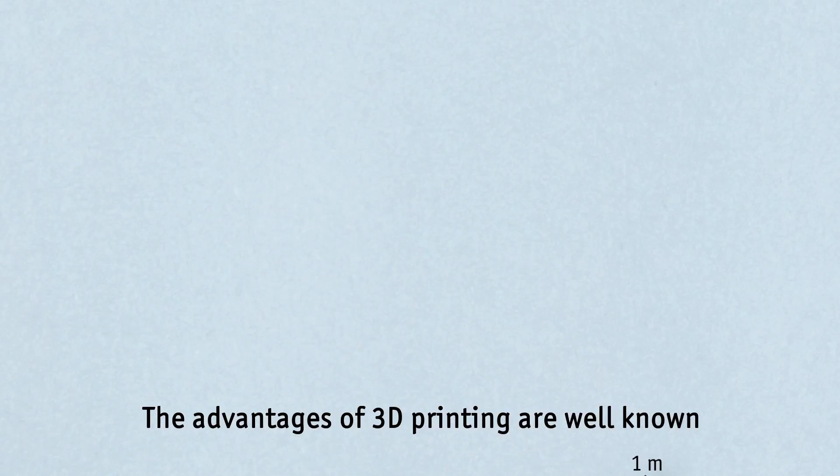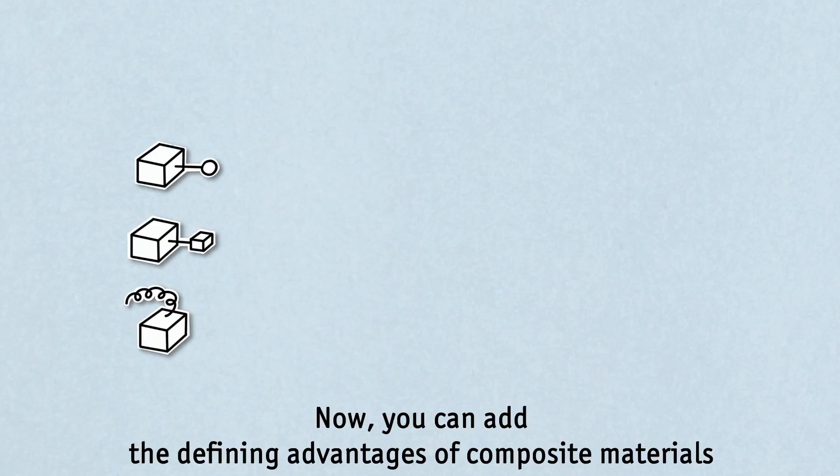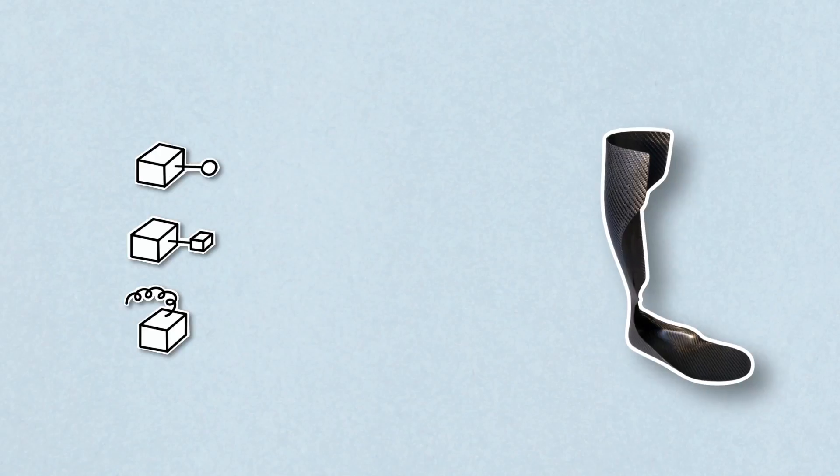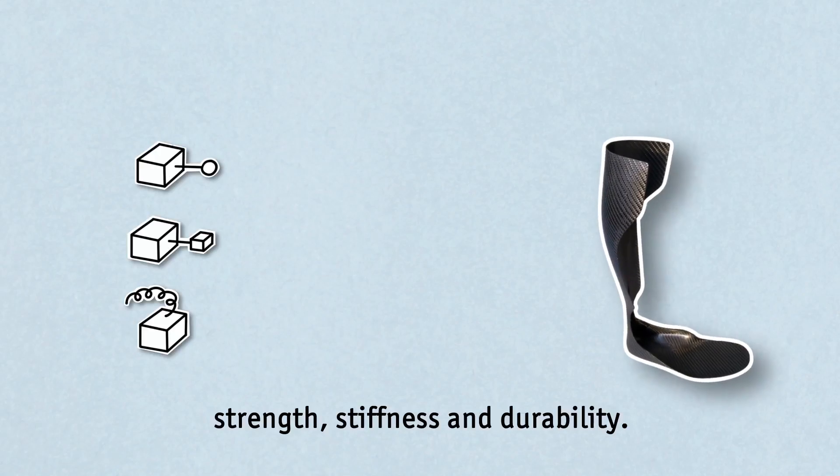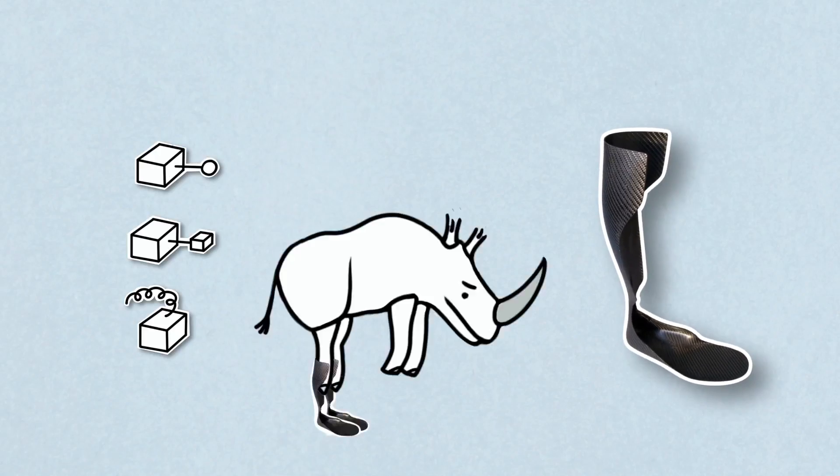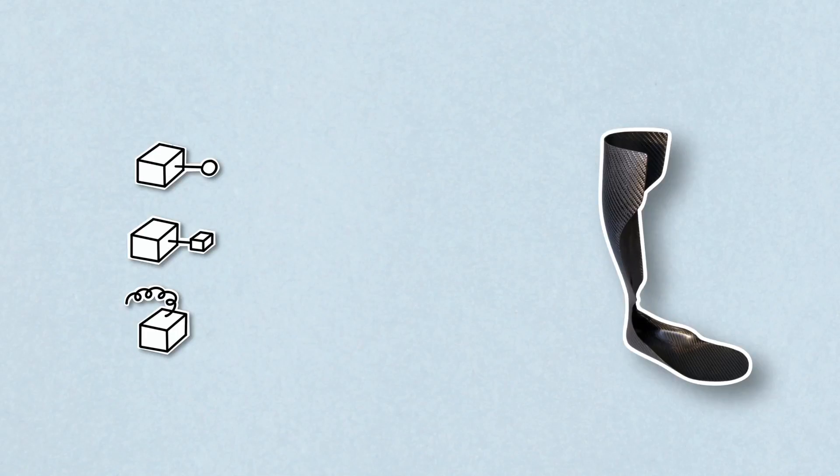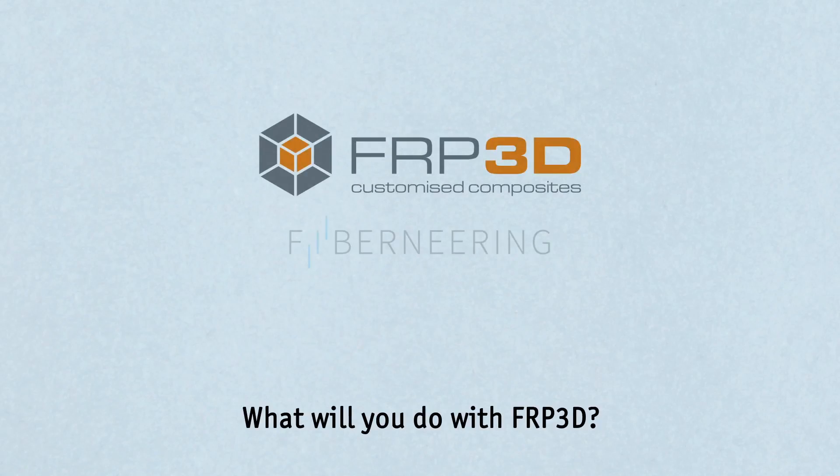The advantages of 3D printing are well known. Low mass, arbitrarily complex and customisable designs. Now, you can add the defining advantages of composite materials, strength, stiffness and durability. What will you do with FRP3D?